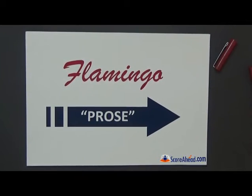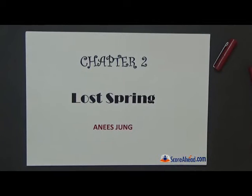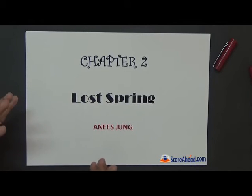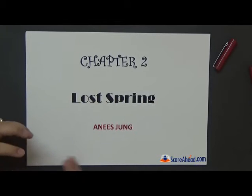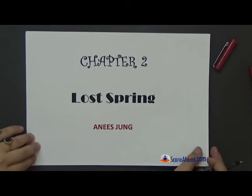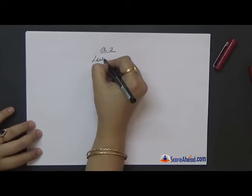Hello, today we would be doing our textbook Flamingo, and from that the prose part — chapter number two, 'Lost Spring' by Anees Jung. It is a very big story which comes true from the soil of India, from the real conditions of children in India — poor children who are deprived of their childhood.